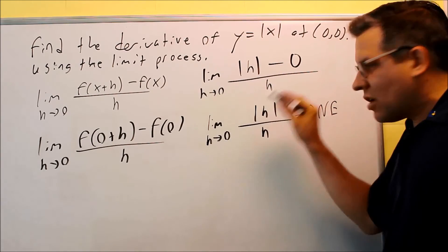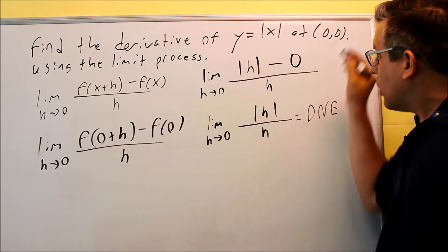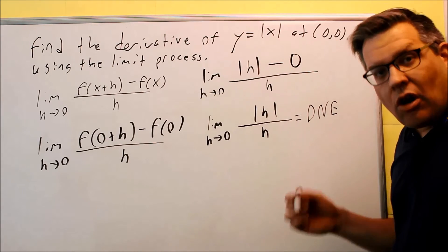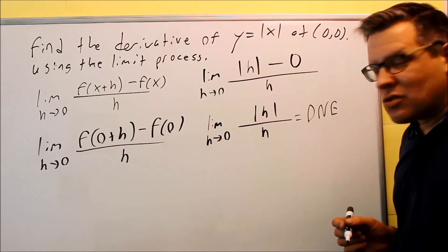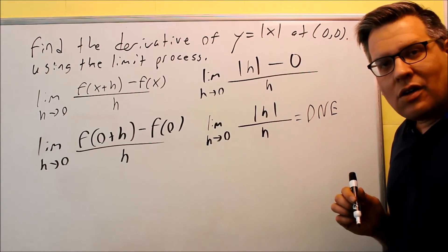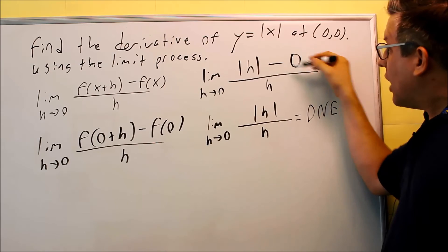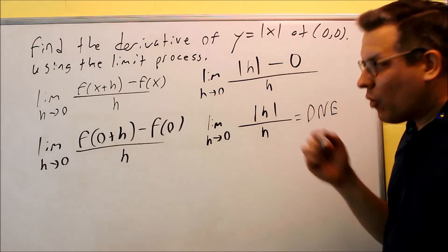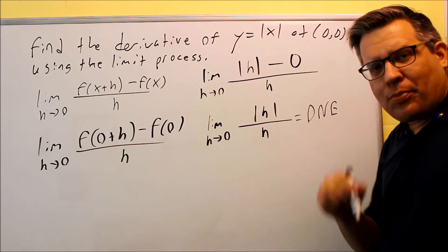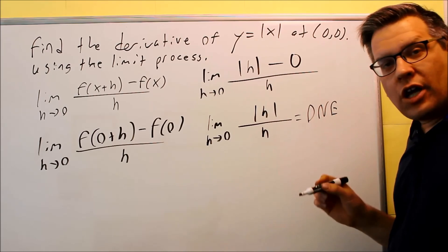So, if the limit doesn't exist, that means that the derivative at (0,0) also does not exist. So, this is a case where it's defined at 0, so f of 0, we did that here and we got 0. However, the derivative, f prime of 0, that would not exist.